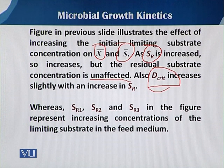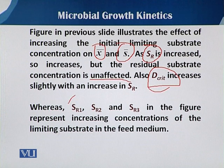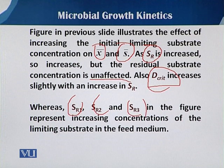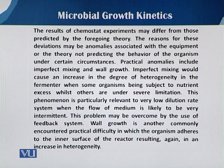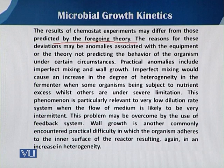As we have seen in the previous figure, there are three different mu_max stages but with only minor changes. SR1, SR2, and SR3 represent increasing concentrations of the limiting substrate in the feed medium. The results of chemostat experiments may differ from those predicted by the foregoing theory. The reasons for these deviations may include anomalies associated with the equipment or the theory not accurately predicting the behavior of the organism.